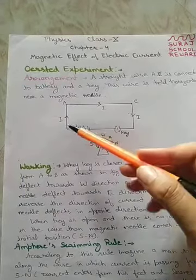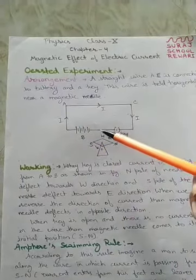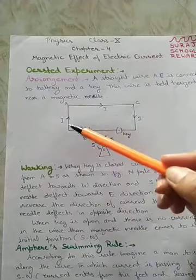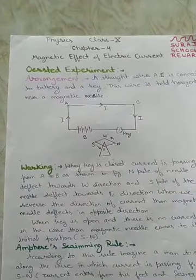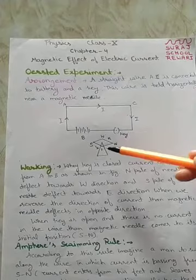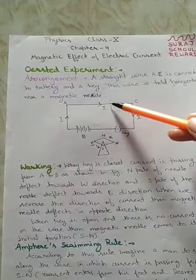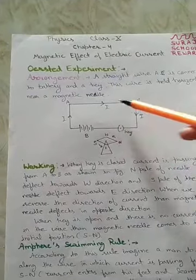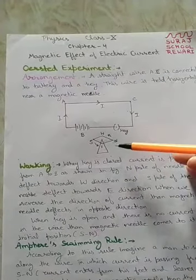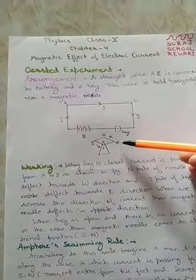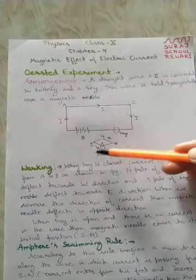...the current starts flowing in this direction, from A to C. If we place this magnetic needle below this part of wire AC, in that case the north pole of the needle will deflect towards the west direction.